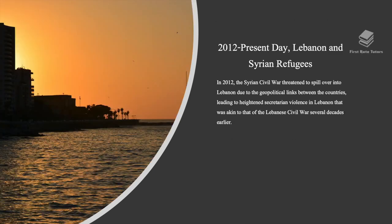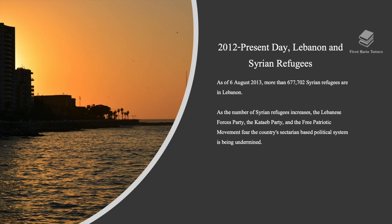In 2012, the Syrian civil war threatened to spill over into Lebanon due to the geopolitical links between the countries, leading to heightened sectarian violence in Lebanon akin to that of the Lebanese civil war several decades earlier. As of August 6th, 2013, more than 600,000 Syrian refugees were in Lebanon. As the number of Syrian refugees increased, the Lebanese Forces Party, the Kataeb Party and the Free Patriotic Movement feared the country's sectarian-based political system was being undermined.